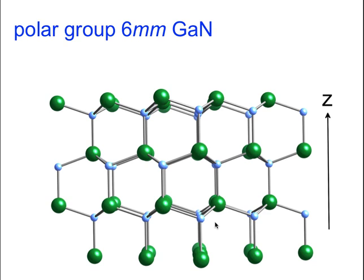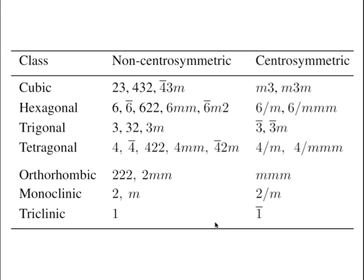So when you are depositing gallium nitride you hope that you get just one of these layers and not a mixture of this layer and that layer, because that would influence the electrical properties and would be regarded as a defect. This is a polar material and you can clearly see that things are not the same in the z direction as in the minus z direction. Again, there is no centre of symmetry; if you look in your table you will see that 6mm is classified in the non-centrosymmetric group, as is 3m.